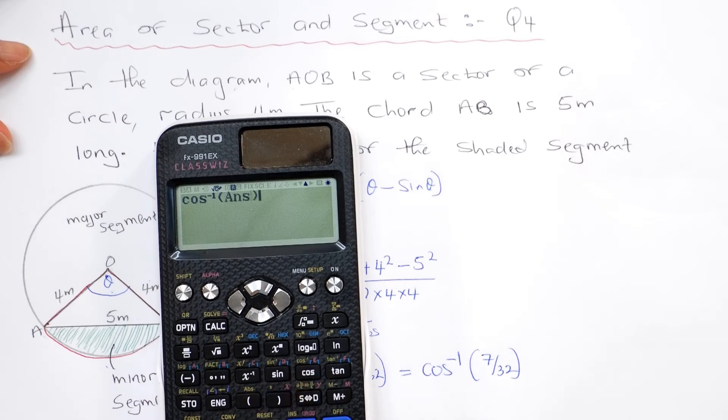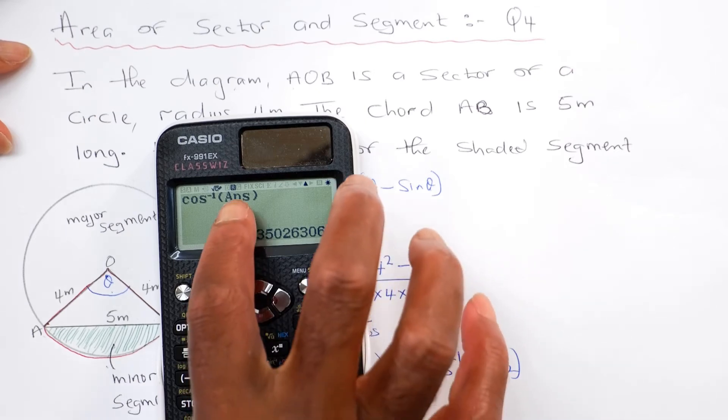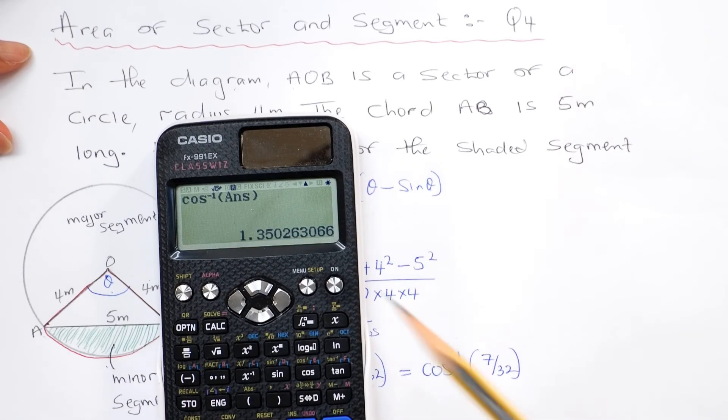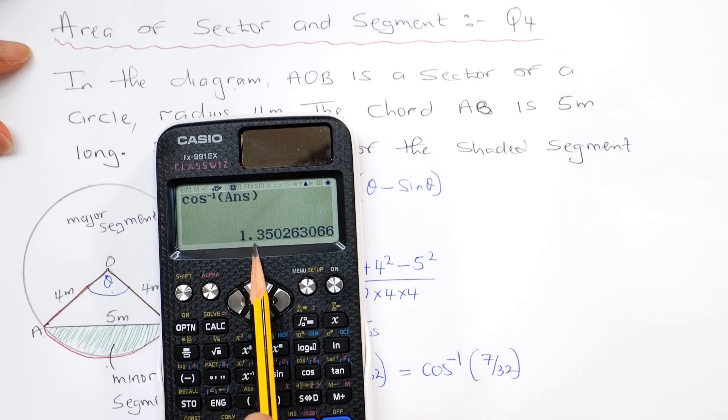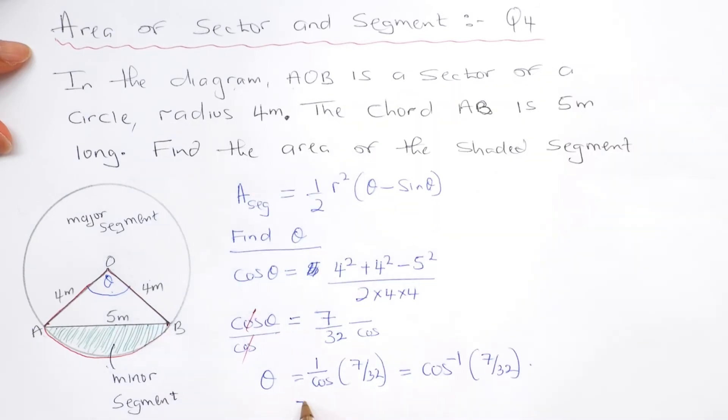Therefore I'm getting this in radians because this is set to radians, so this is 1.35 radians in three significant figures. Theta equals 1.3502 and it goes on as the angle theta, that's five significant figures.